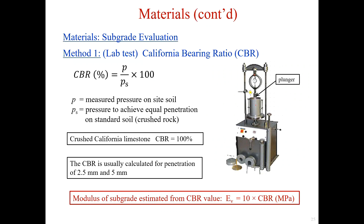For subgrade evaluation to get the CBR value, there are three methods: lab testing, field measurement, and empirical values. The CBR test measures the force required to push a plunger of a specified cross-sectional area into a prepared surface of the sample material. The CBR ratio is expressed as P divided by P_X times 100, where P is the measured pressure on the test soil sample and P_X is the pressure to achieve equal penetration on standard soil or crushed rock. The CBR is 100% for crushed California limestone, and is usually calculated for penetration of 2.5 mm and 5 mm.